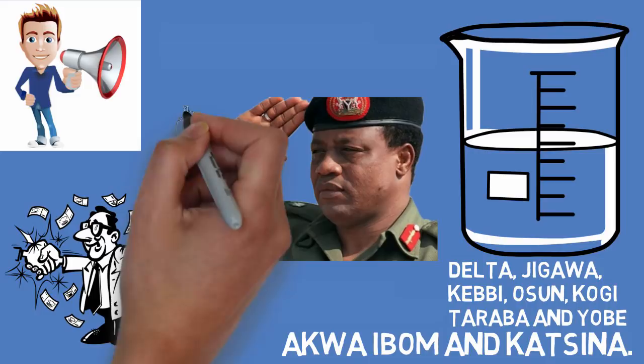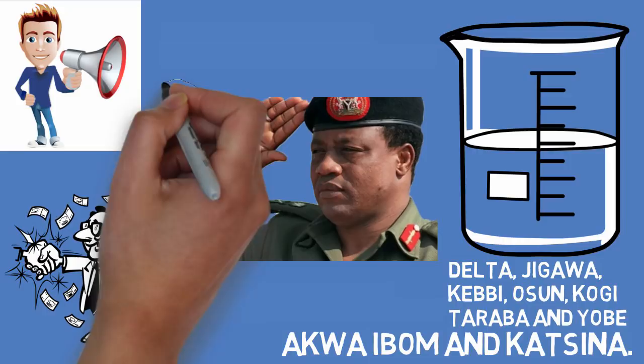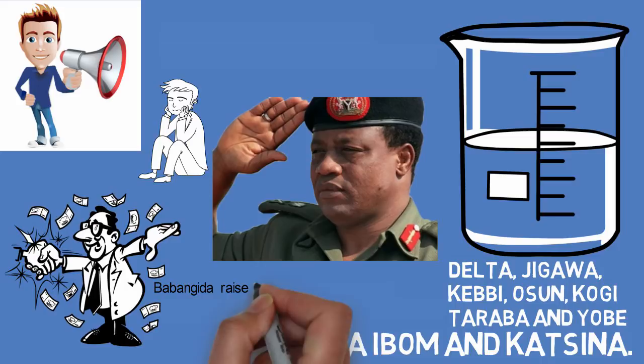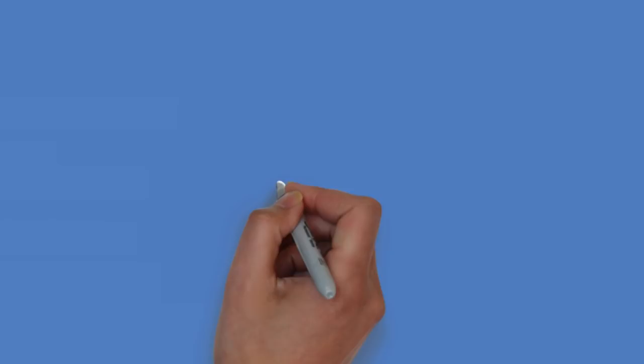In January 1986, Nigeria joined the Organization of Islamic Cooperation, OIC, as its 46th member. The then Chief of Staff Supreme Headquarters, Commodore Ibutu Oko Ukiwe was removed and replaced from his post as Chief of Staff Supreme Headquarters by Babangida because he opposed the registration of Nigeria, a secular country, in the OIC.